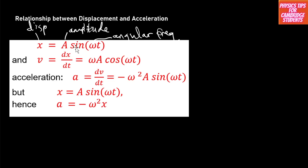If you differentiate again with respect to t, you get minus omega squared A sine(omega t). You differentiate what's in the brackets first, getting omega, and that omega multiplies the other omega to become omega squared, which multiplies A. Differentiating cos gives minus sine. So acceleration equals minus omega squared A sine(omega t). Since A sine(omega t) is our displacement x, we can write: a equals minus omega squared x.